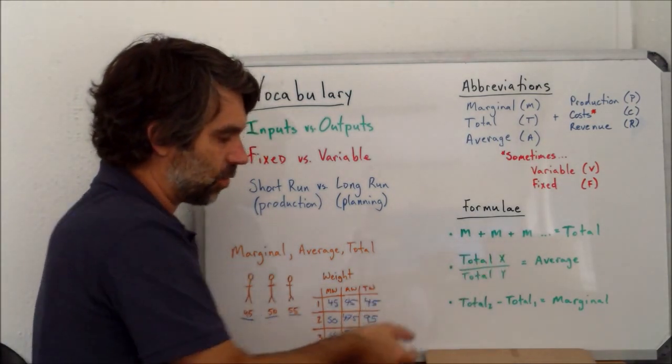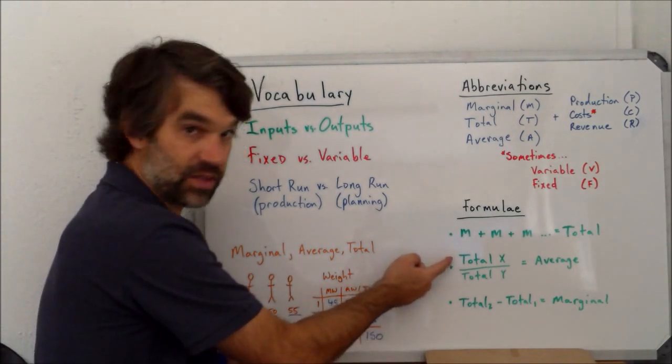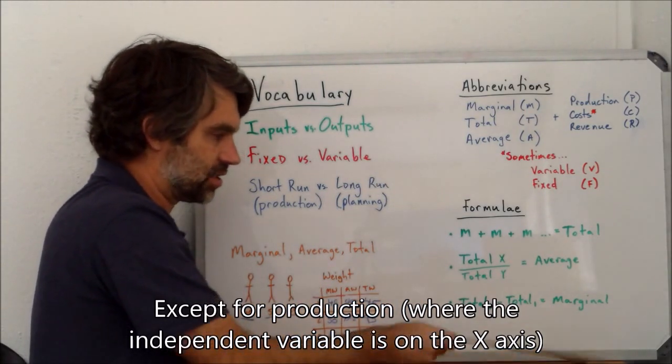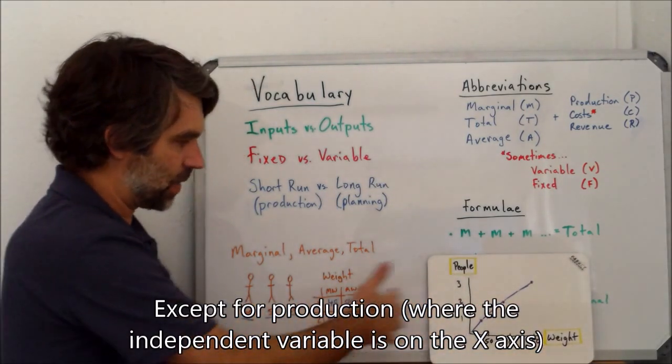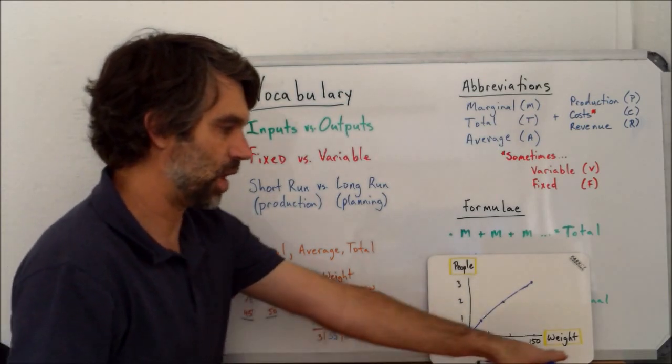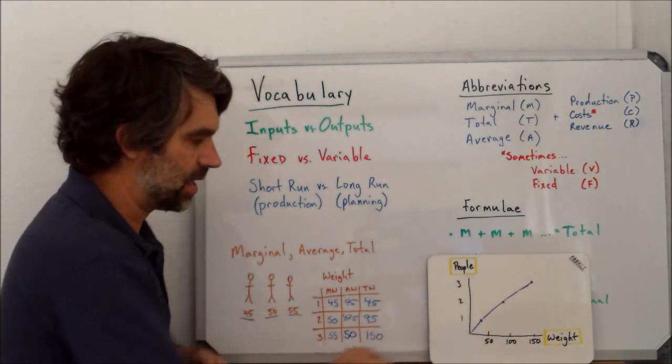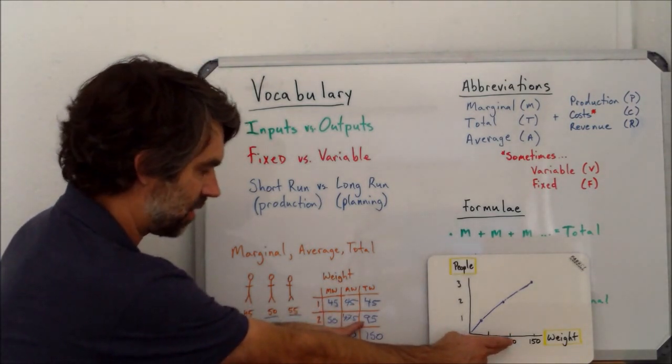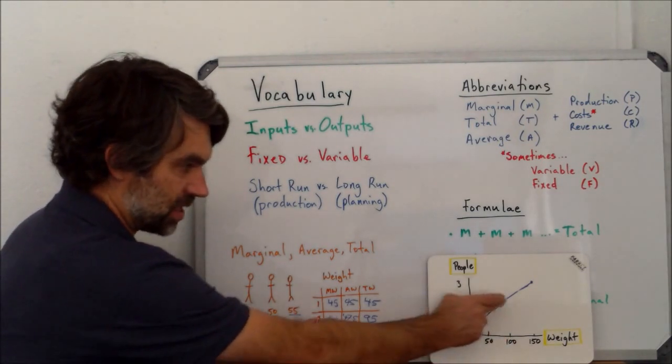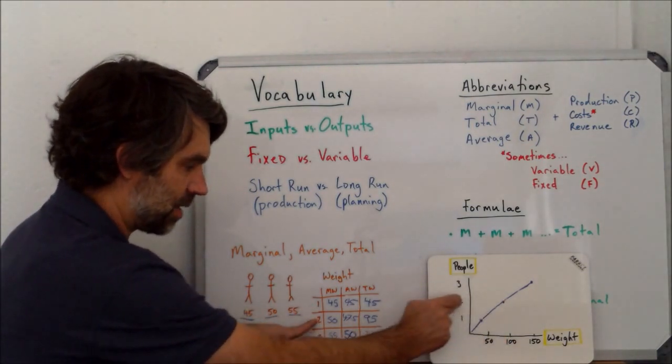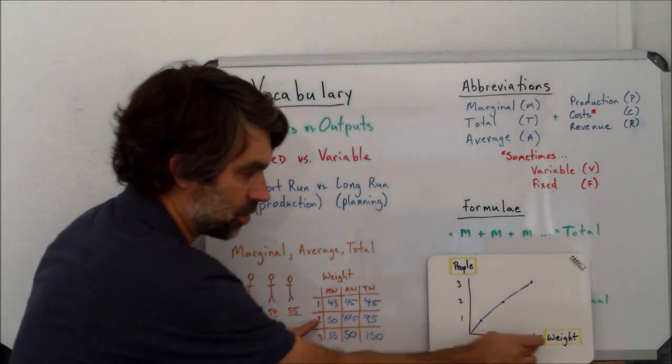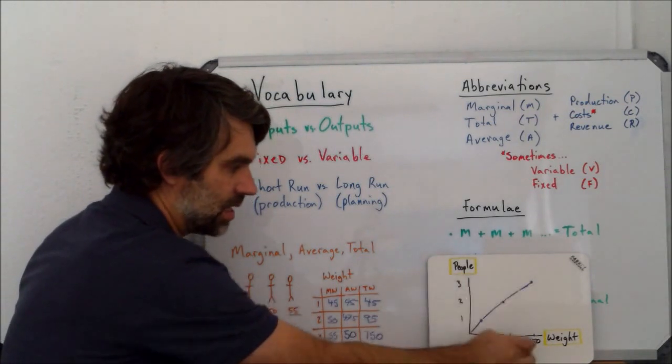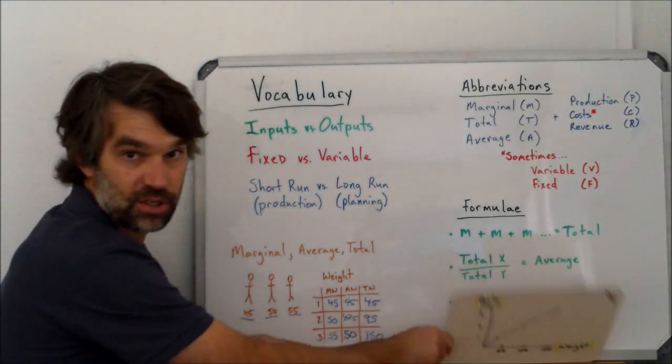All of this is going to end up on a graph, so we're going to take the total of the X axis and divide it by the total we see on the Y axis to get to the average. If I take this information and put it there, where we have weight on the X axis and people on the Y axis, I would take the total weight of 95, and on the Y axis that would be 2, so 95 divided by 2 is 47.5. The total weight is 150, so the X is 150, the Y is 3, so 150 divided by 3 gets the average of 50.